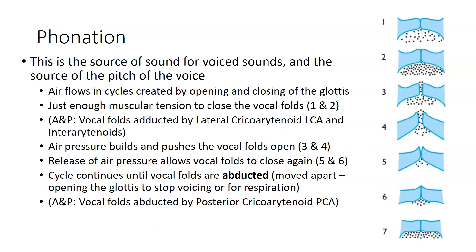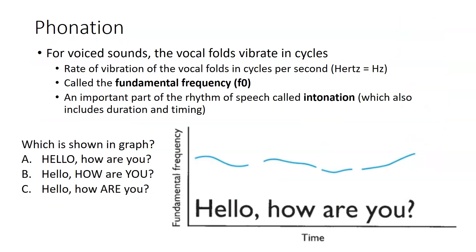This cycle will continue until the vocal folds are abducted — actively moved apart — opening up the glottis to stop voicing or to take a breath for respiration. In this process of phonation, the vocal folds vibrate in cycles. We can analyze that rate of vibration in terms of how many cycles happen per second, measured in hertz. This is known as the fundamental frequency of speech, an important part of the rhythm of speech, which overall is called intonation — including not just fundamental frequency, but also the duration of different words and their timing relative to one another.